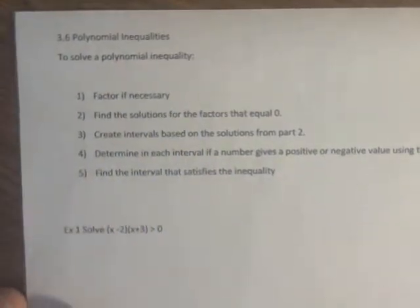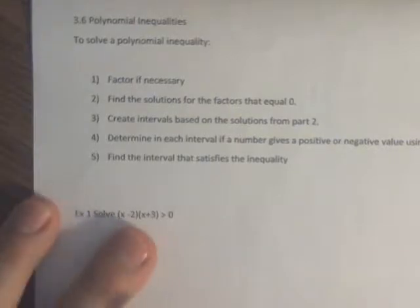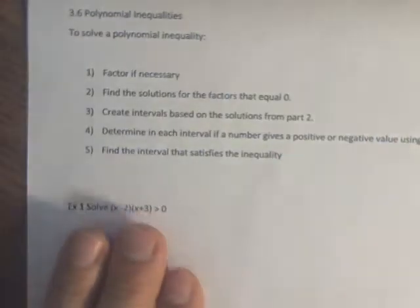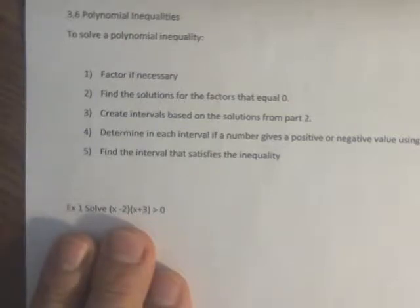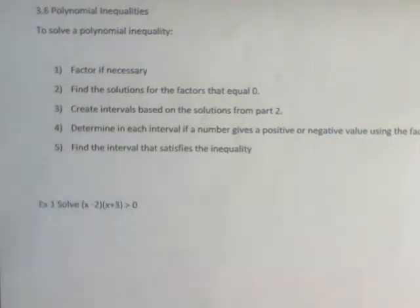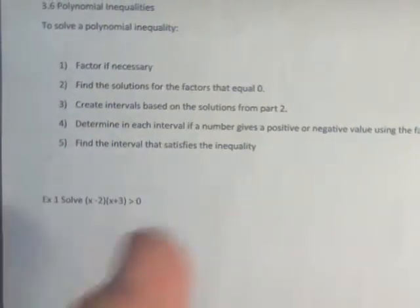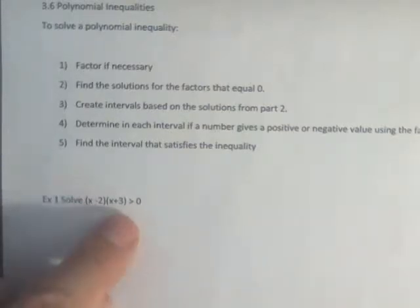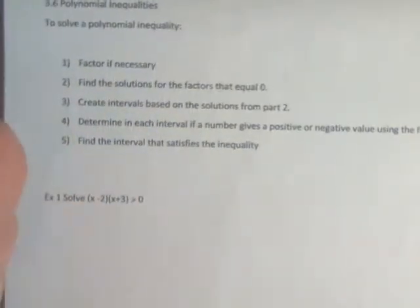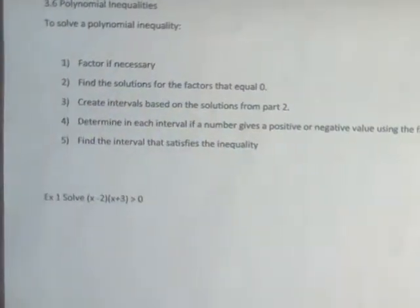To solve a polynomial inequality, it's got to be factored — that's step one. If it's not factored, factor it. Then we're going to find the solutions for the factors set equal to zero, as we did for quadratics. Then we're going to create intervals based on our solutions, and look in each interval to determine if the value substituted in for x gives a positive or negative value, and then find the interval that satisfies the inequality.